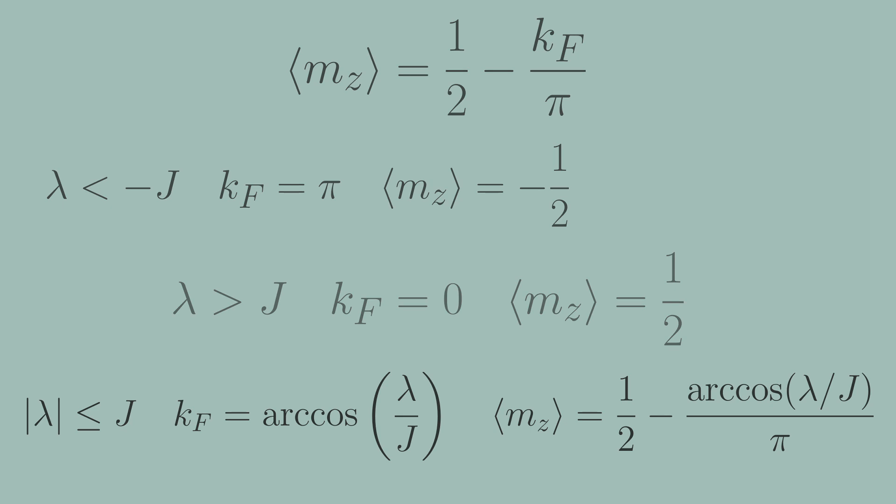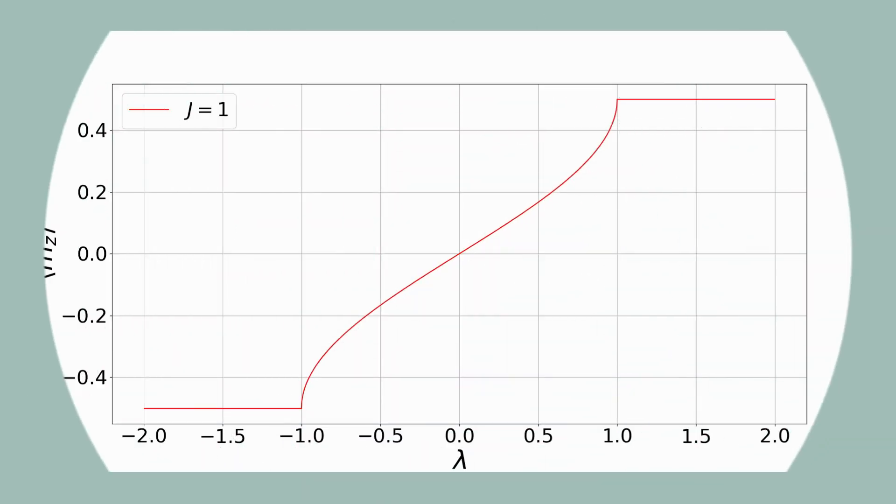We can graph this out to get some intuition for what we're looking at. If we set the coupling parameter j equal to one, we see that at zero field we have no magnetization which is expected. If we follow lambda or the magnetic field as it grows in the positive direction, we see it starts to sharply magnetize the state near the end of the interval, as lambda approaches the coupling constant j.